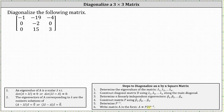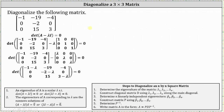To begin, let's find the eigenvalues of the given matrix. To do this, we solve the equation: the determinant of the difference of matrix A and the product of lambda and the identity matrix equals zero. The matrix resulting from A minus lambda times I gives us entries: negative one minus lambda, negative 19, negative four in row one; zero, negative two minus lambda, zero in row two; zero, 15, three minus lambda in row three. Next, we find the determinant, set it equal to zero, and solve.